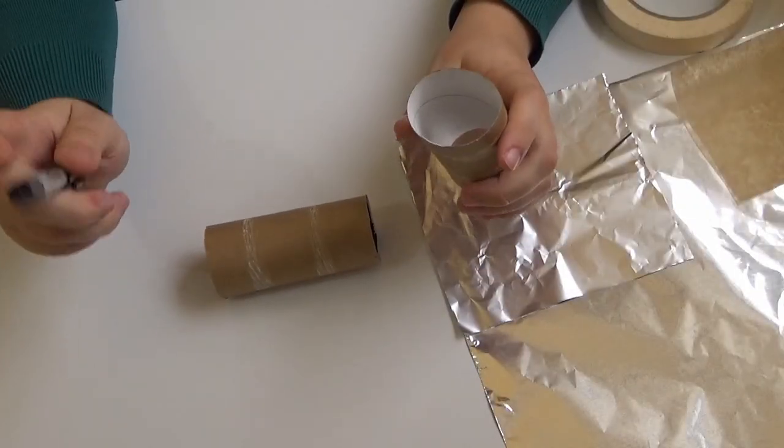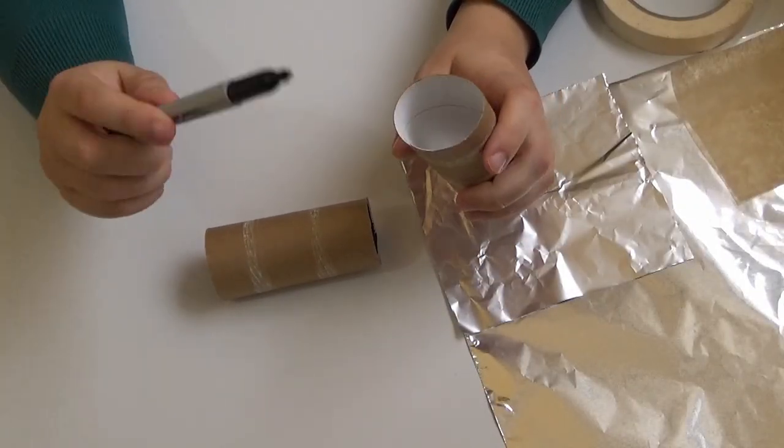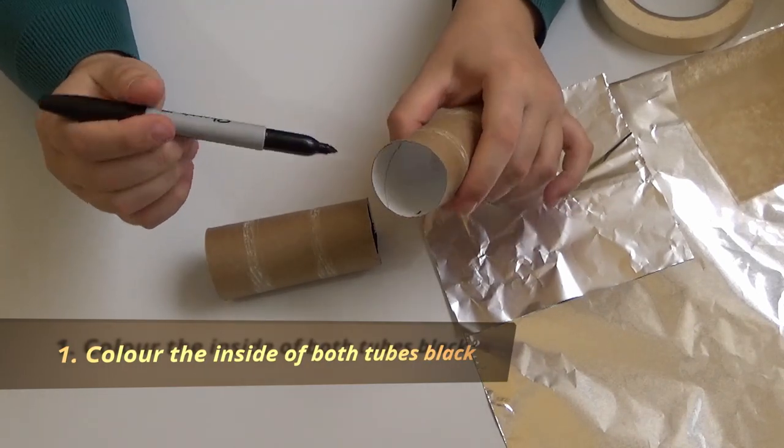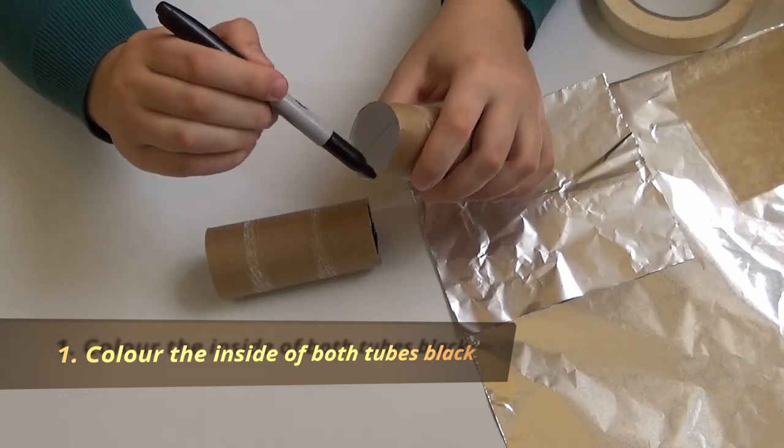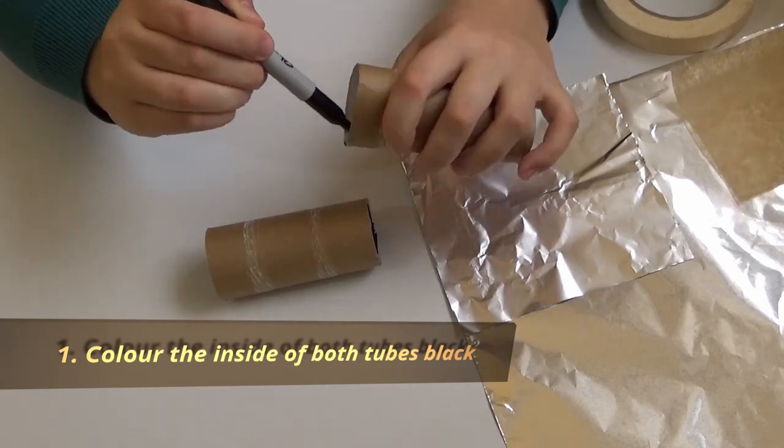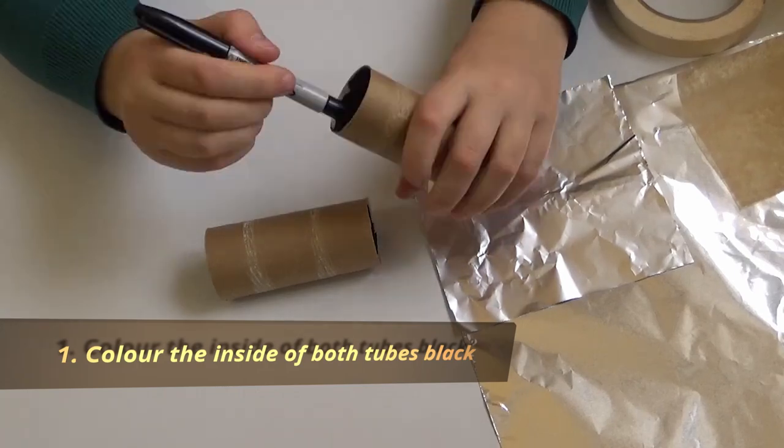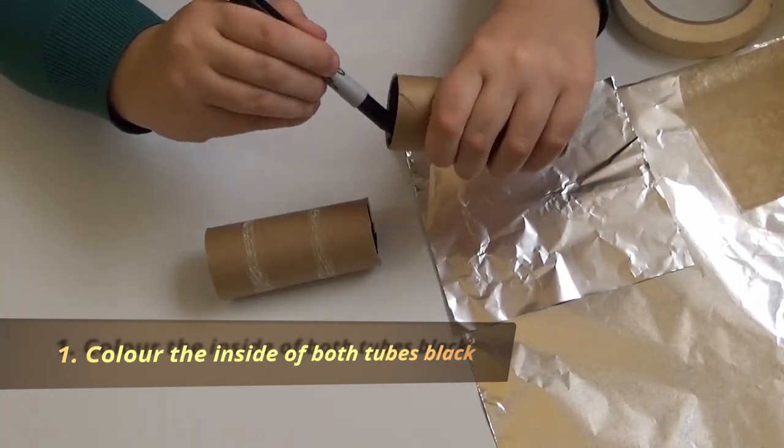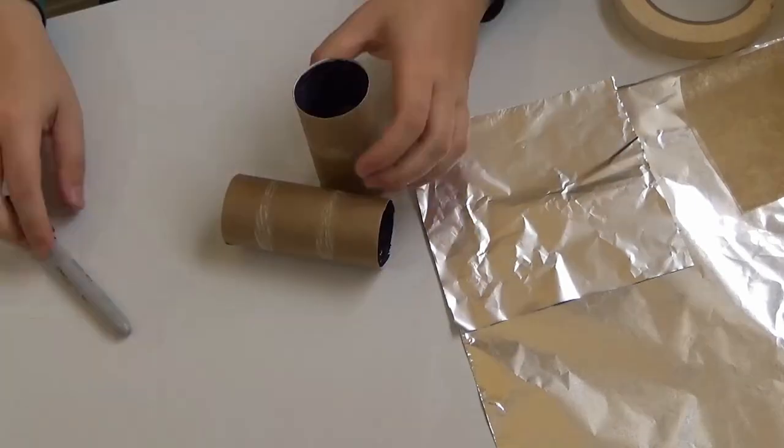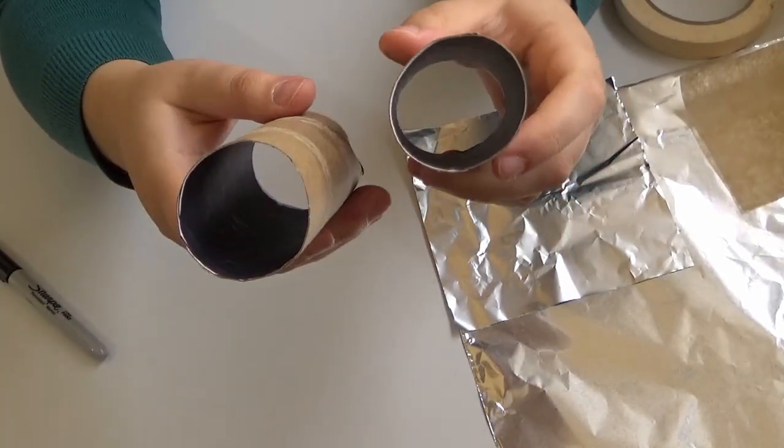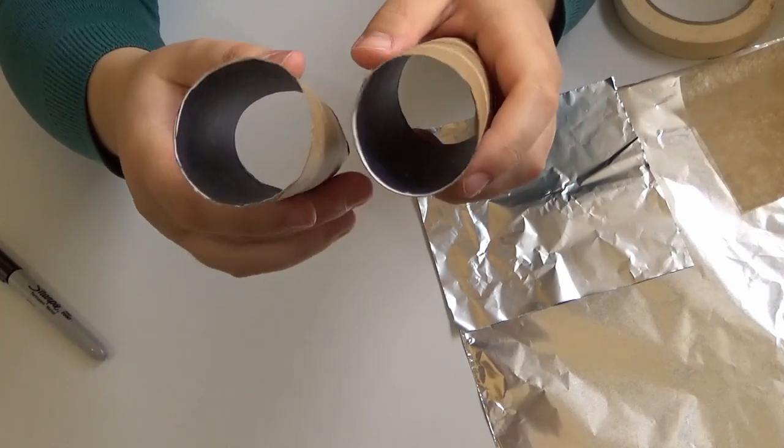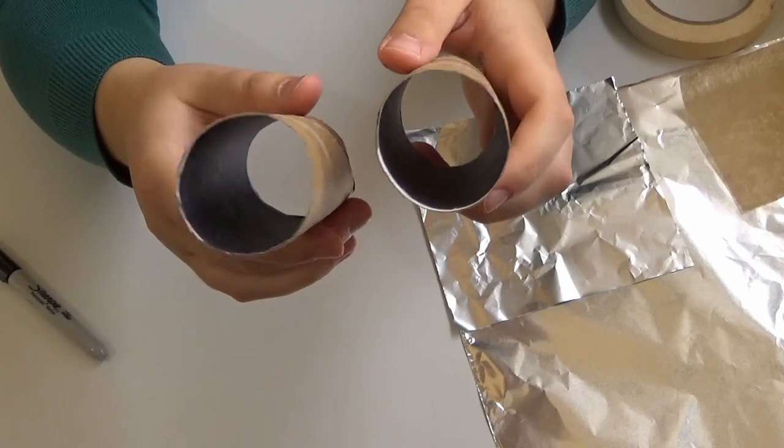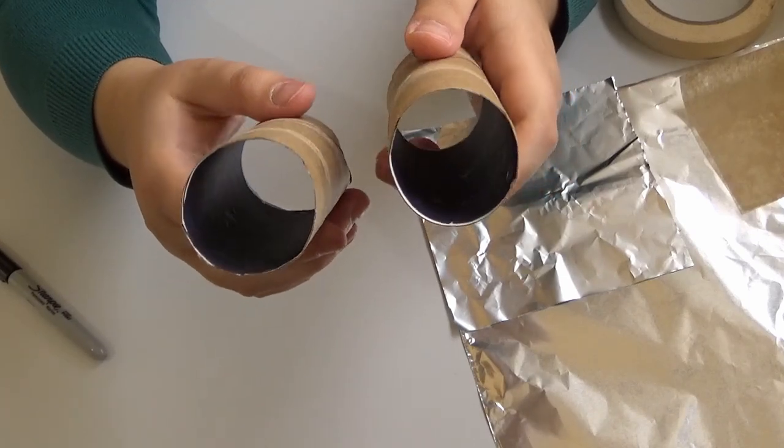So the first thing we're going to do with our toilet paper rolls is make sure the inside of the roll is black. I'm just going to grab my black Sharpie and I'm going to color inside with the black Sharpie. When you're done you should have two tubes that are looking pretty dark inside. As we can see, our black pen absorbs more light than the white, so that just catches any stray light.